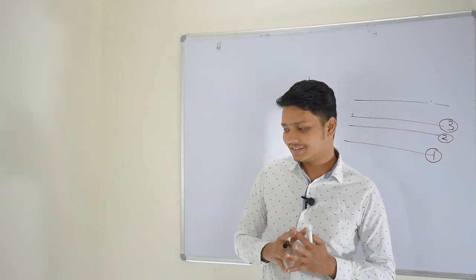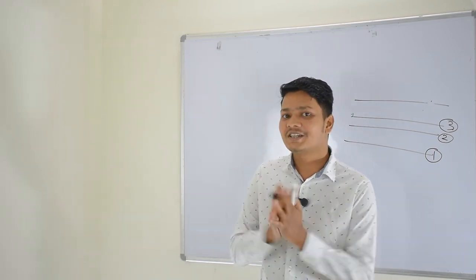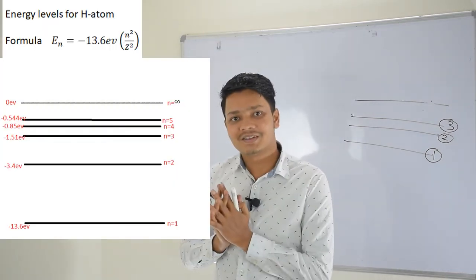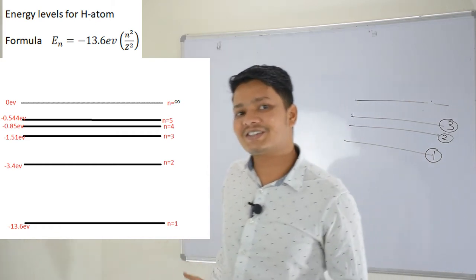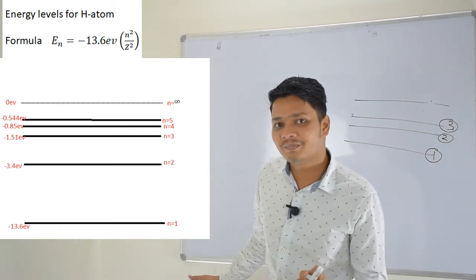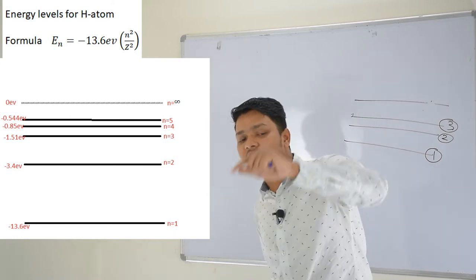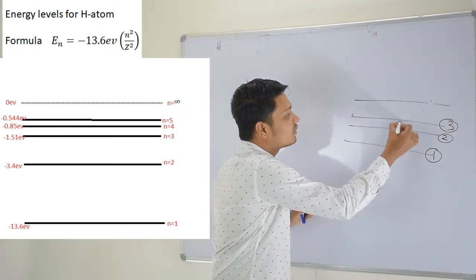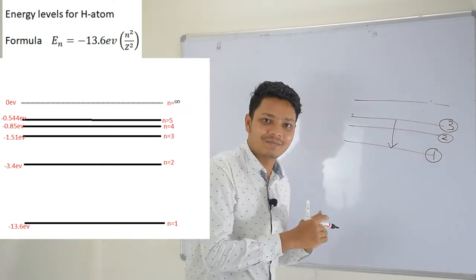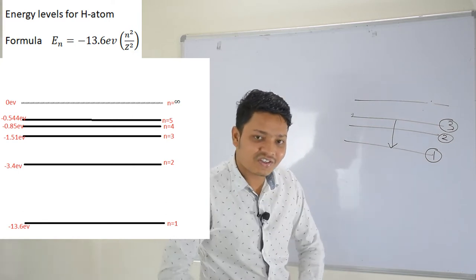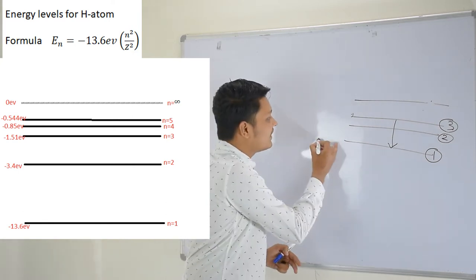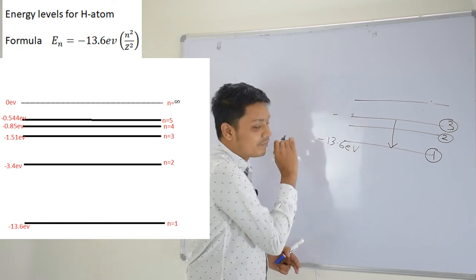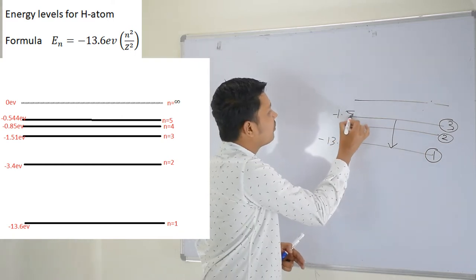Let's discuss the hydrogen spectrum. Energy levels are given here, coming from the formula: minus 13.6 Z-squared by N-squared. Let's say an electron is jumping from a higher state to a lower state — for example, from N equals 3 to the ground state N equals 1. Energy is decreasing: here energy is minus 13.6 eV and here energy is around minus 1.51 eV.